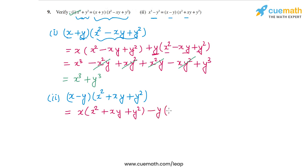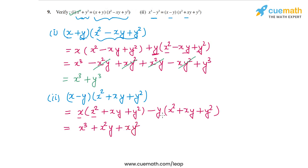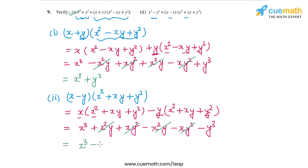Let's expand the product. x times x² is x³, x times xy is x²y, x times y² is xy². For the second term, -y times x² is -x²y, -y times xy is -xy², and -y times y² is -y³. Again, x²y and -x²y cancel out, xy² and -xy² cancel out, and we are only left with x³ - y³.